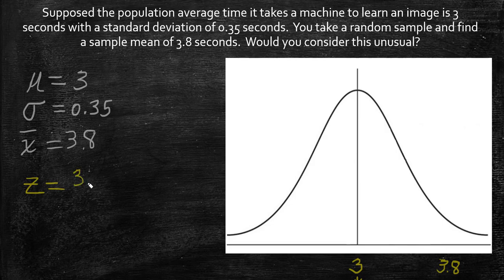Take the sample mean minus the population mean over the standard deviation. If you calculate that with rounding, you should get 2.29.